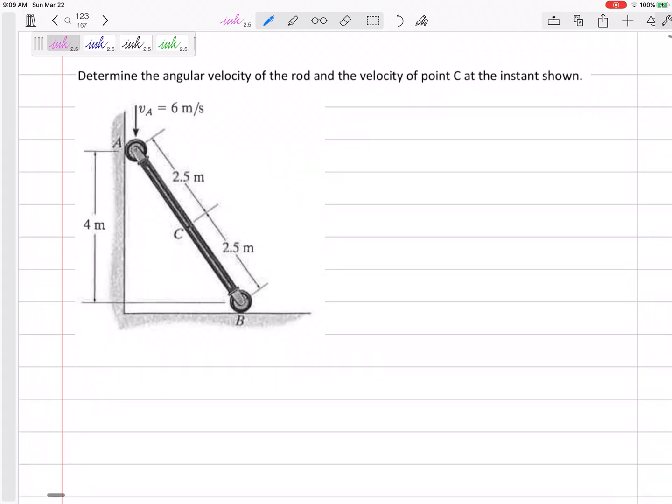Let's look at this problem. Let's determine the angular velocity of the rod and the velocity of point C at the instant shown.